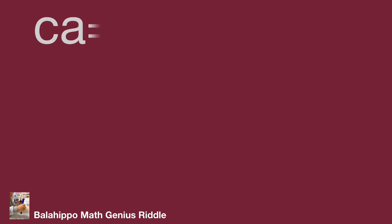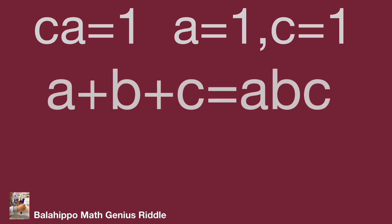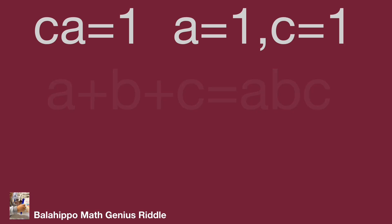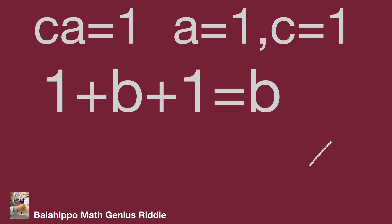When CA equal to 1, A equal to 1 and C equal to 1. Substitute A by 1 and C by 1 to our given equation, A plus B plus C equal to A times B times C, as 1 plus B plus 1 equal to B. It is a false equation, so CA equal to 1 is not the answer.